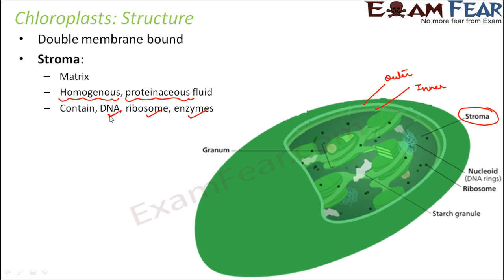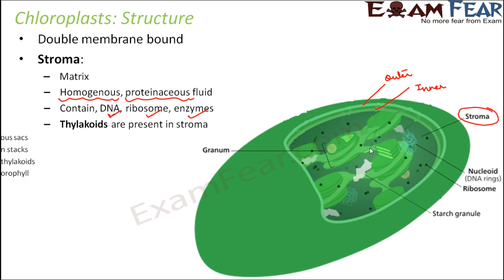DNA, ribosomes, and enzymes are present in the stroma matrix. The two membranes of the chloroplast have a composition similar to the plasma membrane — they are lipid bilayers with two layers of lipids in which some proteins are embedded. Inside the stroma, there are thylakoids — membrane-bound sacs that are another important structure present within the stroma.